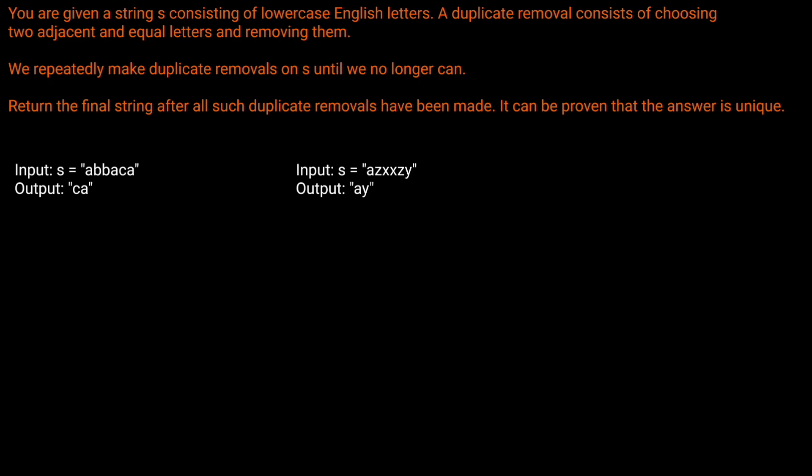You are given a string S consisting of lowercase English letters. A duplicate removal consists of choosing two adjacent and equal letters and removing them. We repeatedly make duplicate removals on S until we no longer can. Return the final string after all such duplicate removals have been made. It can be proven that the answer is unique.